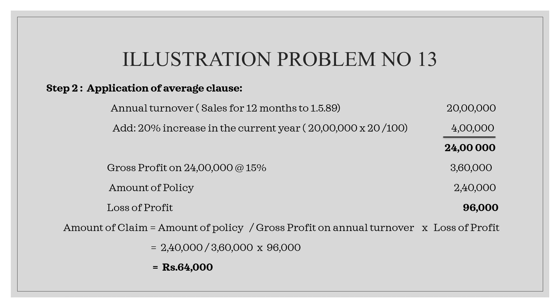Next is the total claim for loss of profit. There are three steps involved. The third step and the fourth one is the application of the average clause — that is the claim to be made. In this problem, we will be given two values: one is to calculate the loss of profit, and the other is the claim to be made using the average clause.